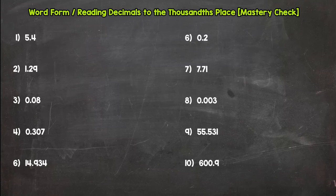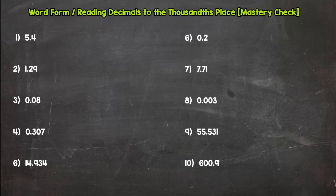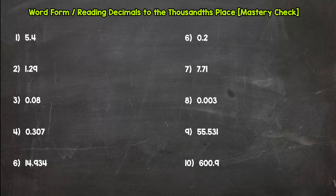Your goal, as you can see, there are 10 decimals below. Your goal is to get 7 or up correct out of 10, so 7, 8, 9, or 10 correct.